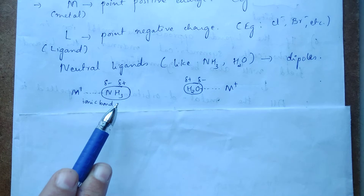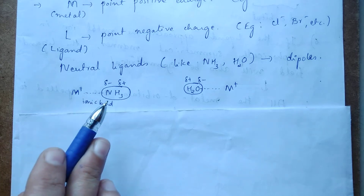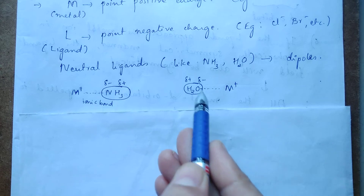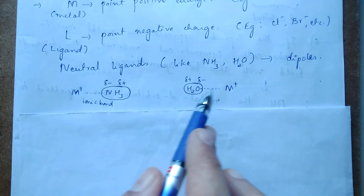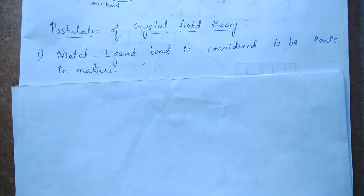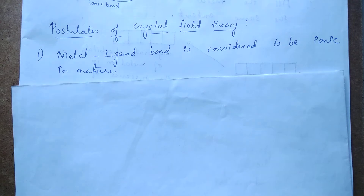When this dipole comes in contact with the metal, there will be ionic interaction between the metal ion and the negative end of the dipole. Similarly, in water, the more electronegative oxygen develops a partial negative charge, and hydrogen has partial positive charge. So the negative end of the dipole gets attracted towards the positively charged metal ion, creating an ionic bond. This is the main principle behind crystal field theory.